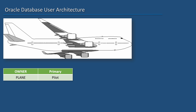The pilot has the rights — the pilot can use those objects. The pilot can take off the plane, fly the plane, and land the plane. The pilot is the primary authority of that plane.